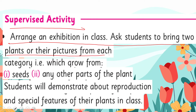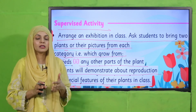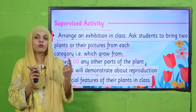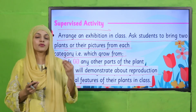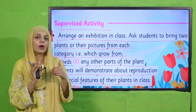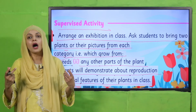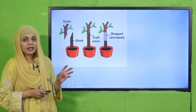Supervised activity: Arrange an exhibition in class. Ask students to bring two plants or their pictures — one that grows from seeds and one that grows by other parts of the plant — and students will demonstrate about reproduction and special features of their plants in the class. Teachers, please give students homework one day in advance to bring pictures of two plants: one that grows from seed, like an apple tree, and another that grows from other parts, like rose from stem, potato from bud, or aloe vera from leaves. Students will then present in class how each plant grows.